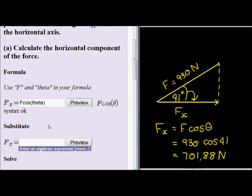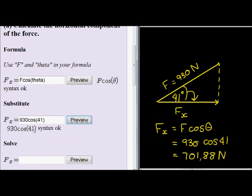Now once we substitute, we put 930 in there, cos, and theta in this case is 41 degrees. Preview - that looks perfect: 930 cos 41. And now once we've solved it, we get 701.88 N. Please remember your unit, otherwise it will be wrong.